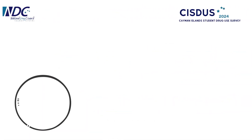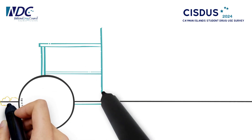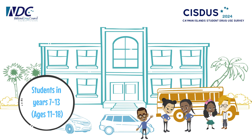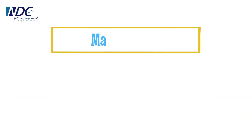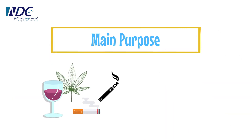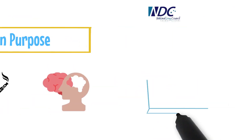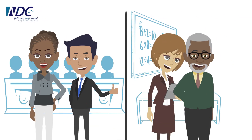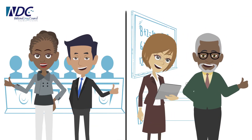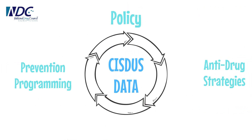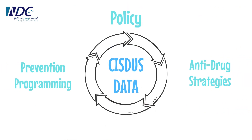The Cayman Islands Student Drug Use Survey is a public health survey completed by both public and private school students in years 7-13. The purpose of the survey is to understand what students know about alcohol and other drugs, as well as their mental health experiences. The data from the survey helps our government, schools, and the National Drug Council develop appropriate policy, prevention programming, and other anti-drug strategies that improve the well-being of our youth.